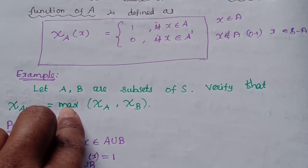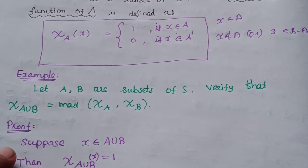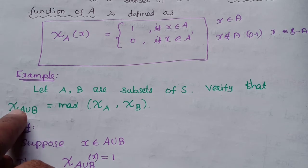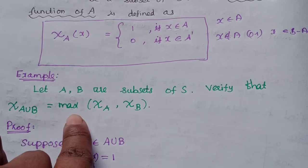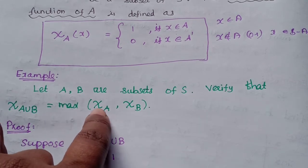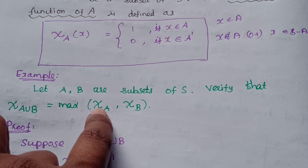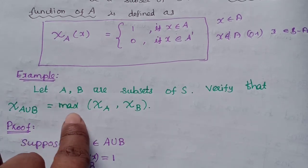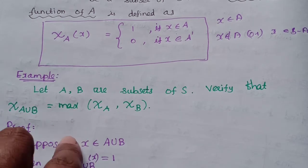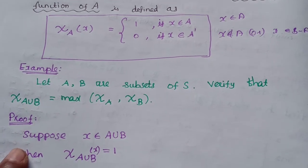Let A and B be subsets of S. We verify that the characteristic function of A union B equals the maximum of psi of A and psi of B. This is a great result. Let us prove that.